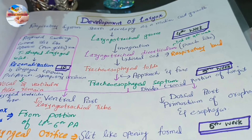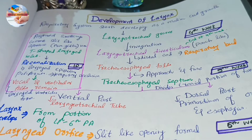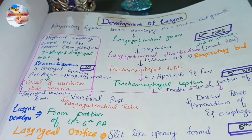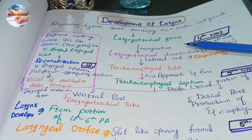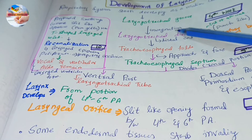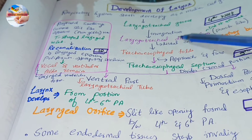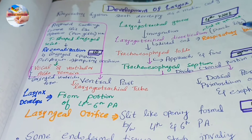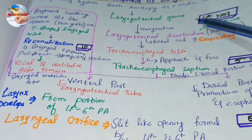Today we are going to discuss the development of the larynx. As we know, the larynx is part of the respiratory system, which starts developing in the fourth week. The respiratory system starts developing as a median outgrowth called the laryngotracheal groove, appearing in the floor of the caudal end of the anterior foregut or primordial pharynx. At the end of the fourth week, this laryngotracheal groove invaginates to form a pouch-like outgrowth called the laryngotracheal diverticulum, whose distal end contains a respiratory bud — the primordium for the respiratory tree.